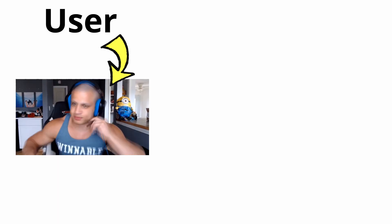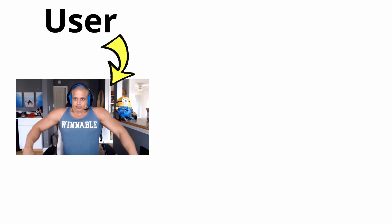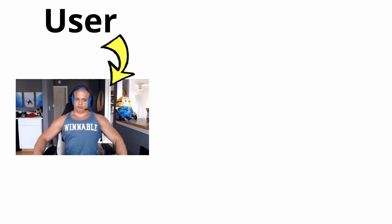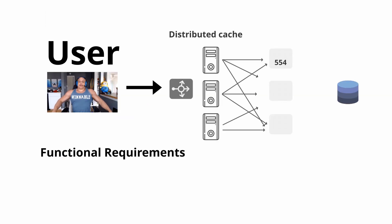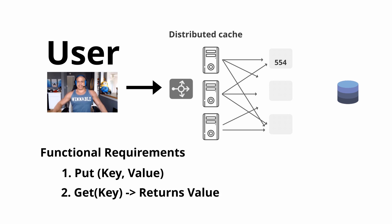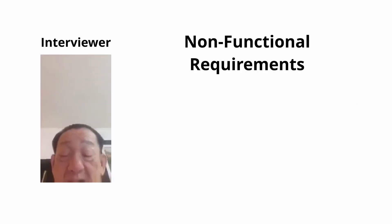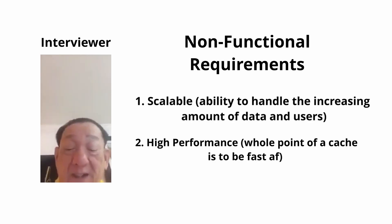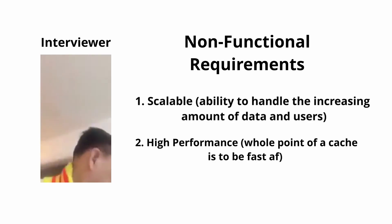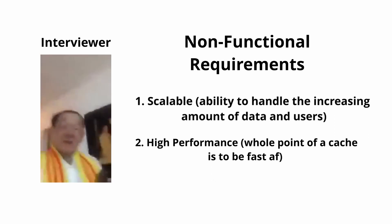Clarify what the system should actually do. What is the functionality expectation from the user's perspective? For our cache, the two requirements will be to put an item to the cache and also read items via a get call. For non-functional requirements, usually the interviewer will challenge you with scalability and high performance, since you'll need to make trade-offs to achieve both.